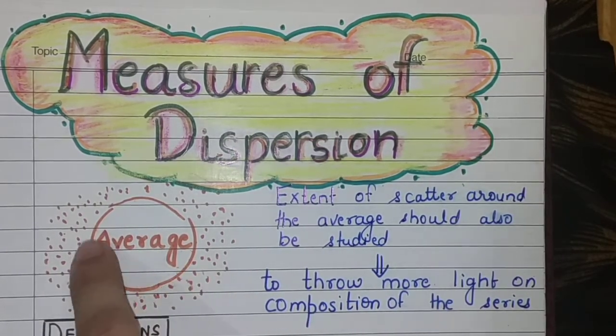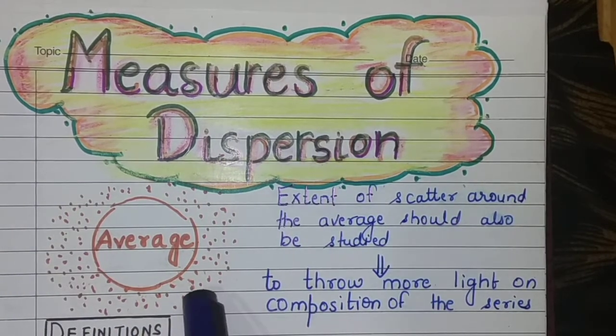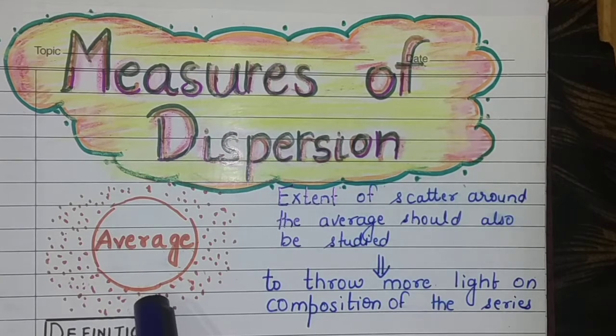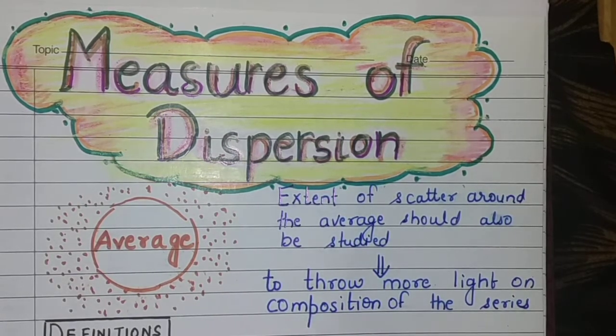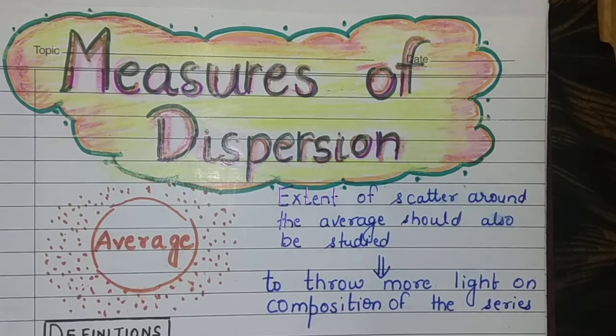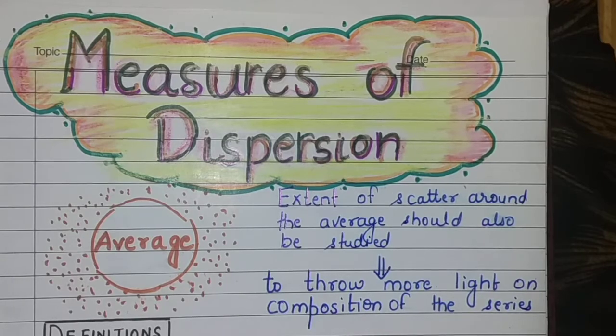How much our data is scattered around the average? How much it has been spread so far? This is why we need to know this so that we can check our items inside our data. Basically, what is the composition of the data that we are studying and analyzing?